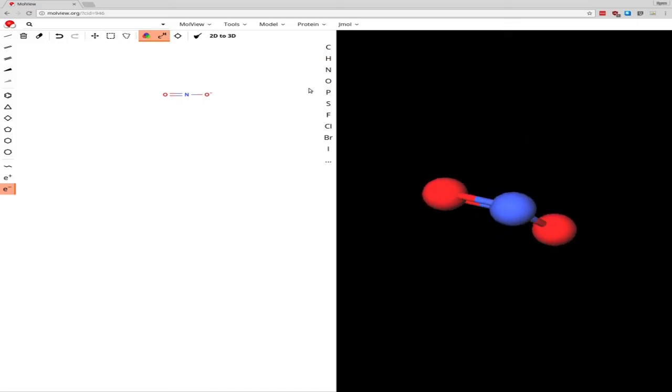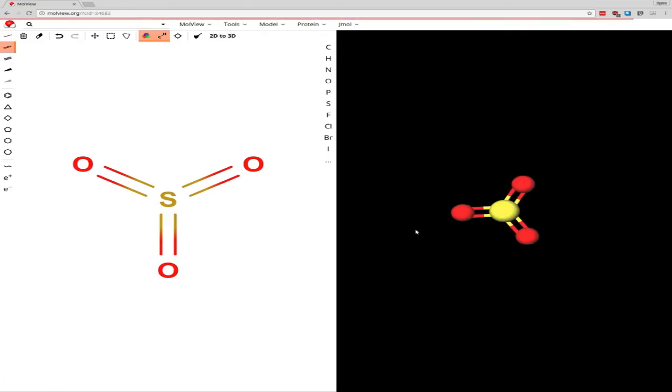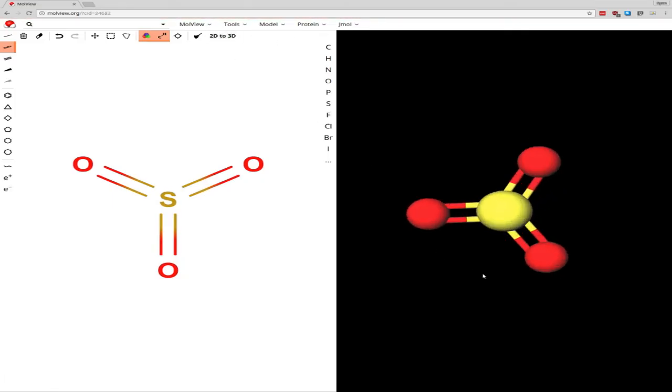Now let's look at our sulfur trioxide. We have sulfur with three oxygens attached to it, and they're all double bonded together. If you want to clean up this structure here, you can click this broom over here, and it will make sure everything is nicely spaced. Now we can click 2D to 3D to get our sulfur trioxide. It's trigonal planar.